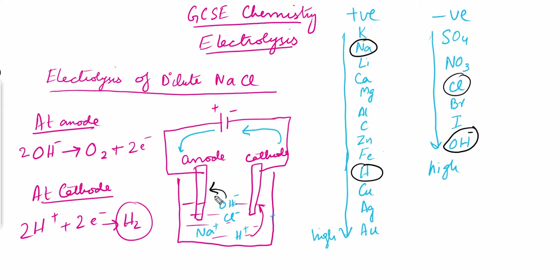This order of priority is what you must remember. Whenever you encounter positive and negative ions in electrolysis, check this order of priority: send the higher-priority negative ions to the anode and the higher-priority positive ions to the cathode. This covers the conceptual part of electrolysis; now we will move to some exam-related questions.